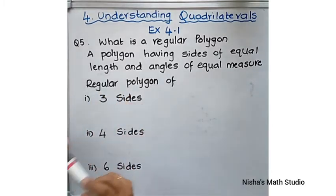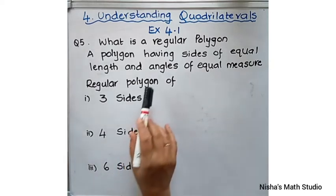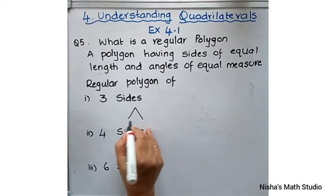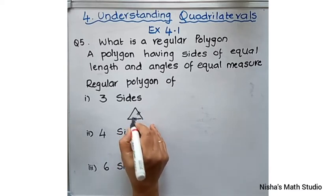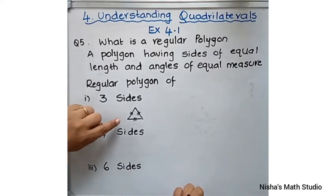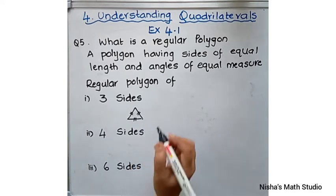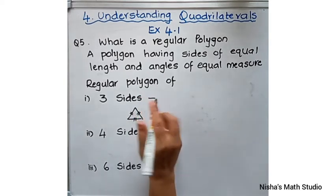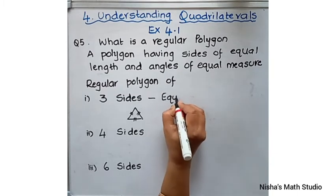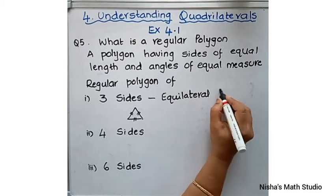Now, they have also asked us to name regular polygons of three sides. A three-sided polygon is called a triangle. If all three sides are the same, such a triangle is called an equilateral triangle. So a three-sided regular polygon is an equilateral triangle.